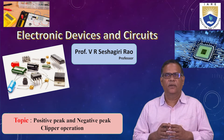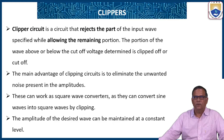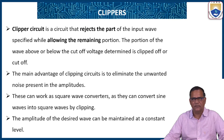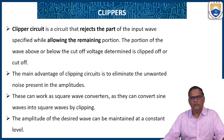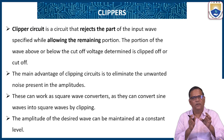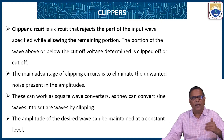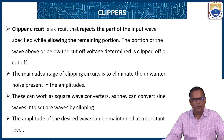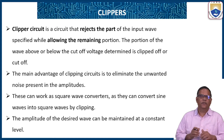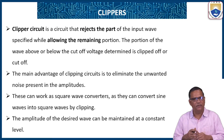Today I am going to discuss about the positive and negative peak clippers and their operation. A clipper is a circuit that rejects a specified part of the input wave and allows the remaining portion. It blocks the unwanted portion and allows only the desired portion. The portion of the wave above or below the cutoff voltage is determined by the reference voltage.